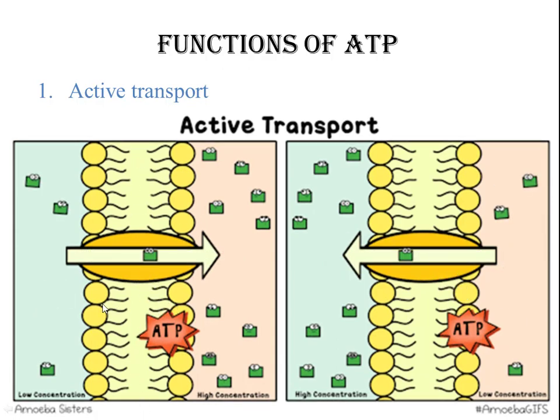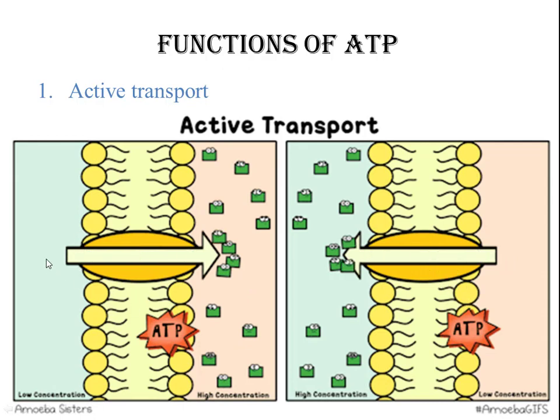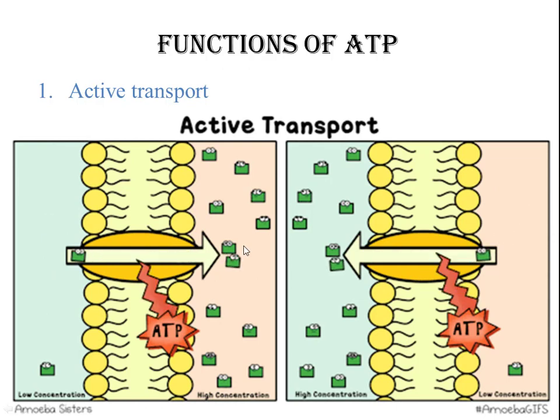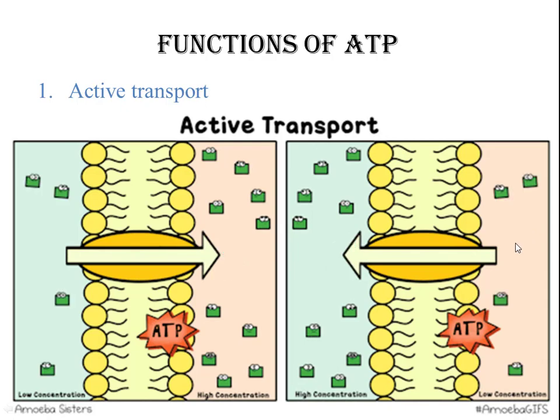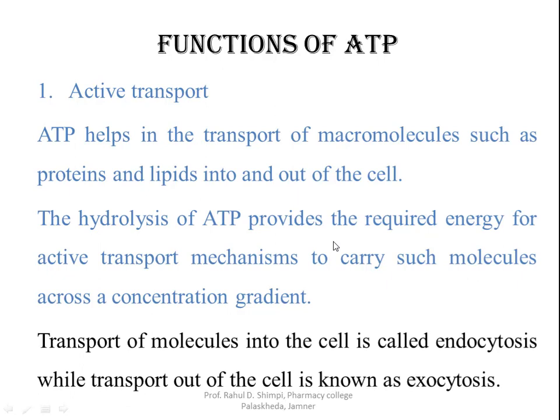Whenever substances move inside the cell, the cellular membrane is involved. The intracellular region is inside the cell, and the extracellular region is outside. When substances move inside the cell, it is known as endocytosis, and if substances move from the intracellular region to the extracellular region, it is known as exocytosis. So the transport of molecules into the cell is called endocytosis, while the transport of substances out of the cell is known as exocytosis. This is the very first function of ATP: they are involved in the active transport of substances across any biological membrane.